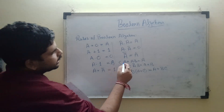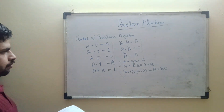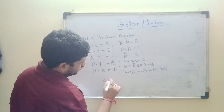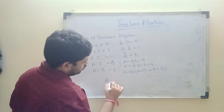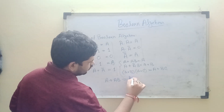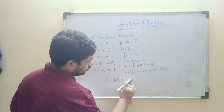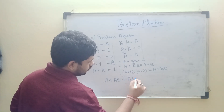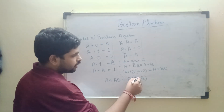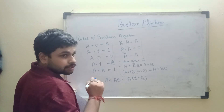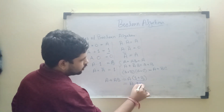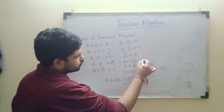To prove A + AB = A: we factor out A from A + AB to get A·(1 + B). Since 1 + B = 1, we get A·1 = A. Therefore A + AB = A is proved.